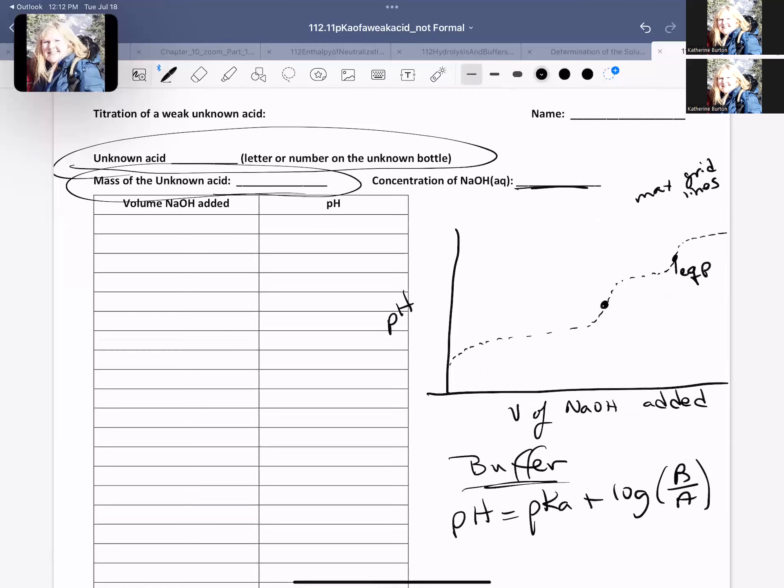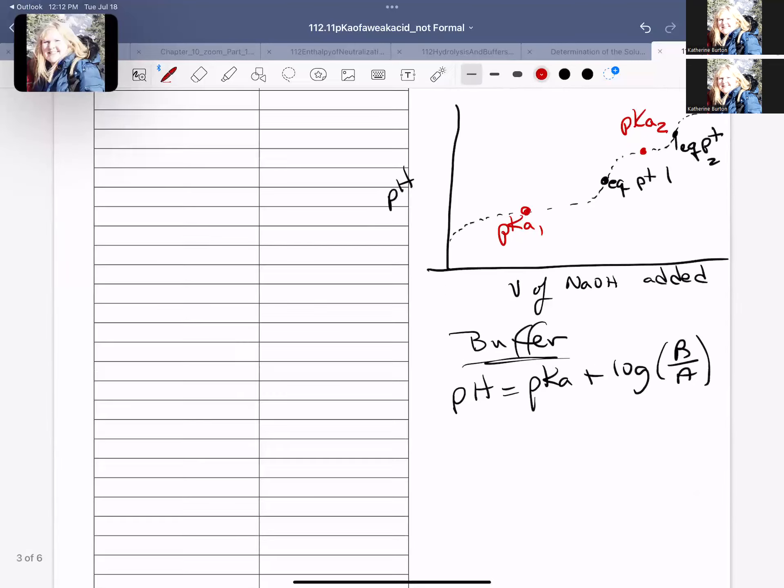I'm just going to call them EQPT2, EQPT1, and you are also going to have, if you have a diprotic acid, you are going to have two pKa's, where this is pKa1, and halfway there is pKa2. Those will be more even, if we've got it drawn a little better, but it'll do for now.